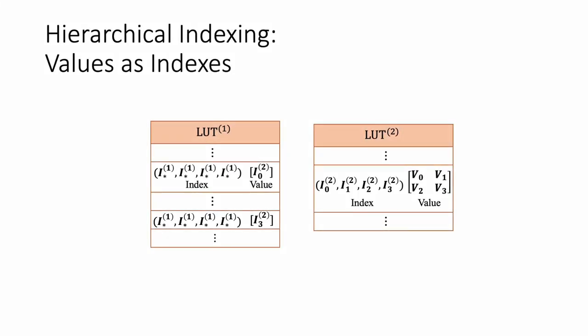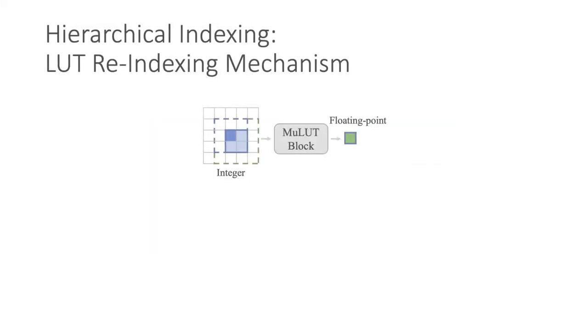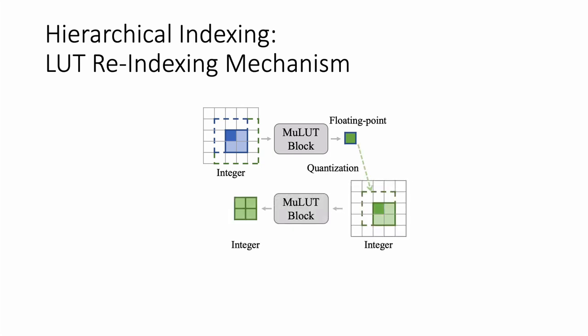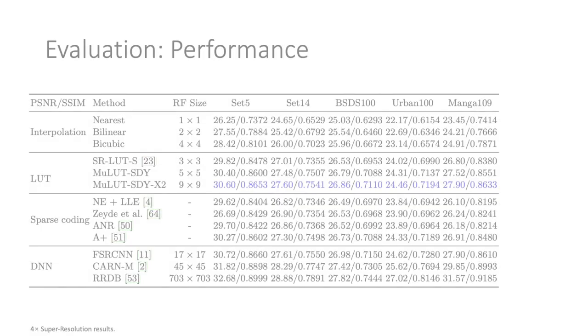The second way we propose is cascading LUTs with hierarchical indexing. The values in the previous LUT serve as the indexes of the following LUT. Besides, we devise a LUT re-indexing mechanism to integrate the behavior of hierarchical indexing in the learning process of MuLUT networks. Precisely, the prediction values of the previous MuLUT block are quantized to integers in the forward pass while their gradients are retained as floating point values in the backward pass.